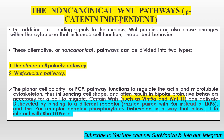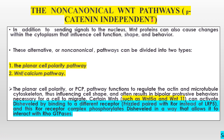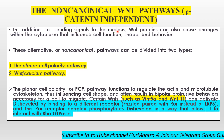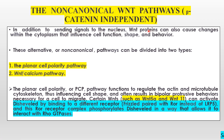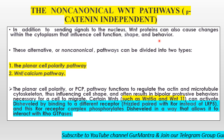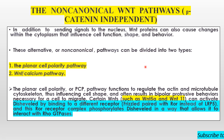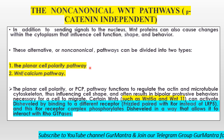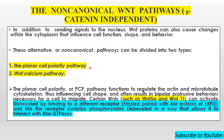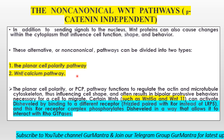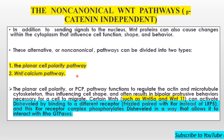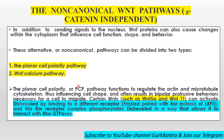In the non-canonical WNT pathway, beta-catenin plays no role, unlike what we studied in the canonical pathway — WNT/beta-catenin. In addition to sending signals to the nucleus, WNT proteins do very important work when we need to bring changes in cell function, shape, and behavior. This alternative non-canonical pathway is divided into two types: the planar cell polarity (PCP) pathway, which is usually studied in avian/chick development, and the WNT calcium-regulated pathway, which I will teach in part 3.